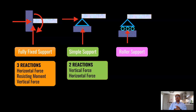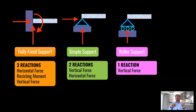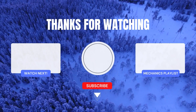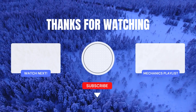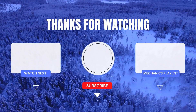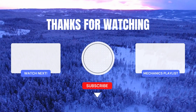A roller support has only one reaction — vertical — because it is allowed to rotate and move horizontally, with only vertical movement prevented. Thanks for watching this lecture today. Click the left side of the screen to watch another video relevant to this lecture, or the right side to watch the full playlist on structural mechanics.